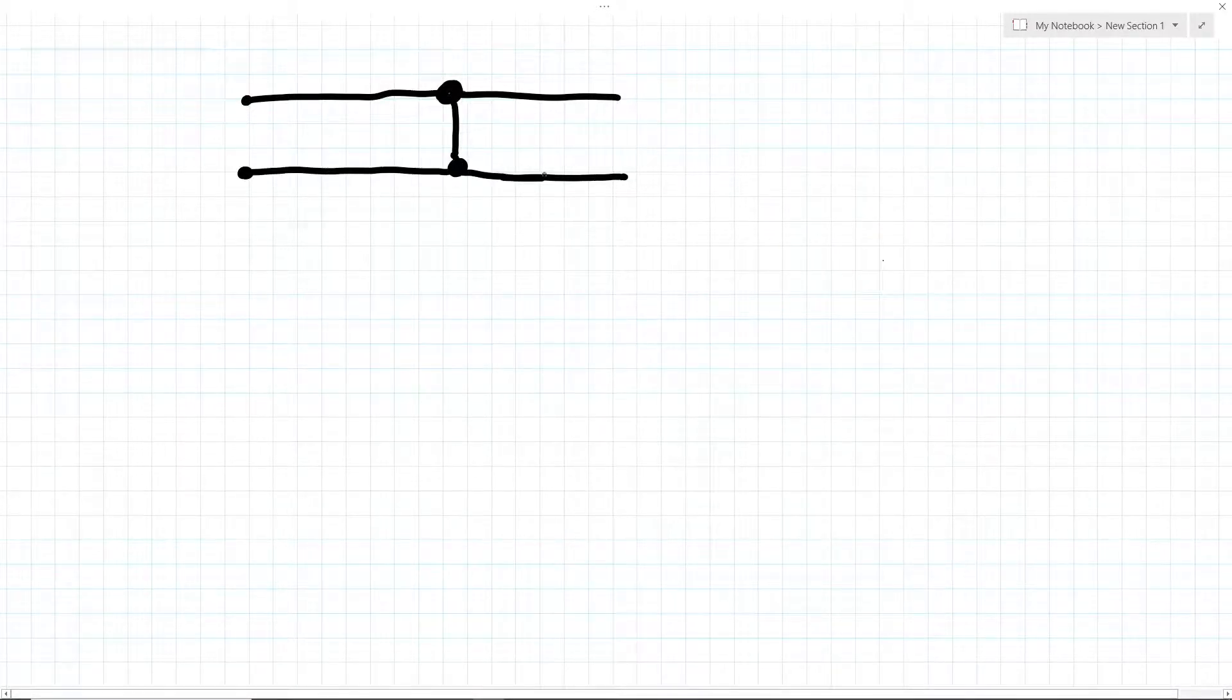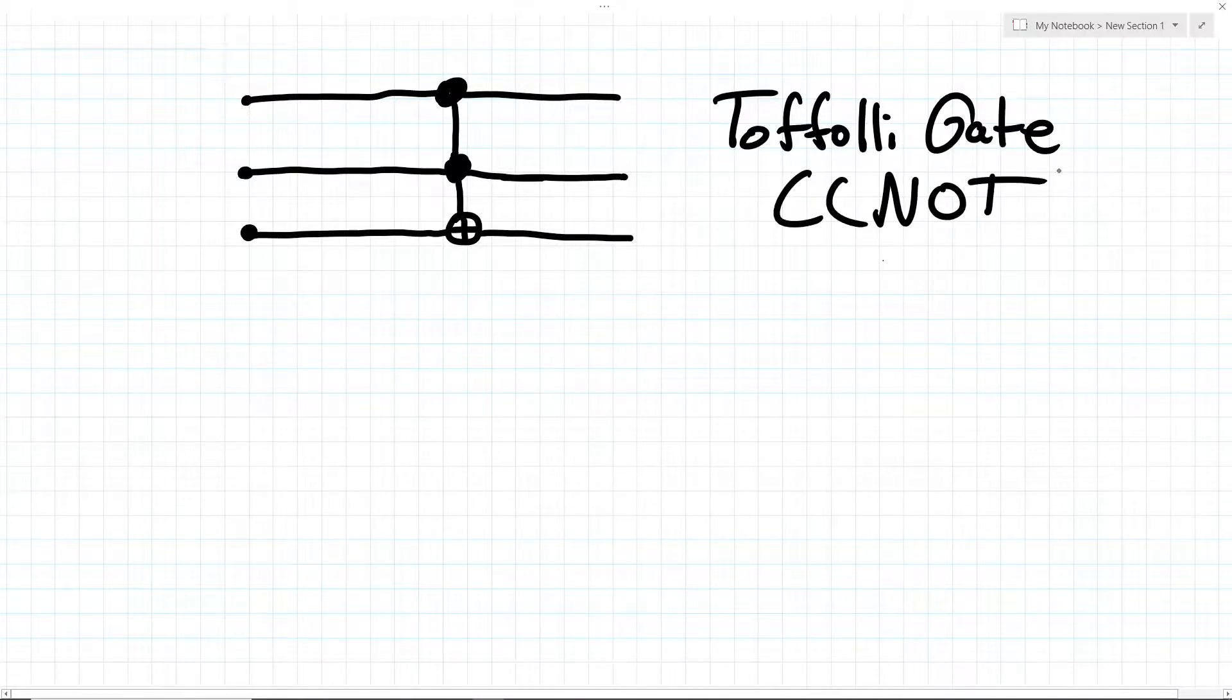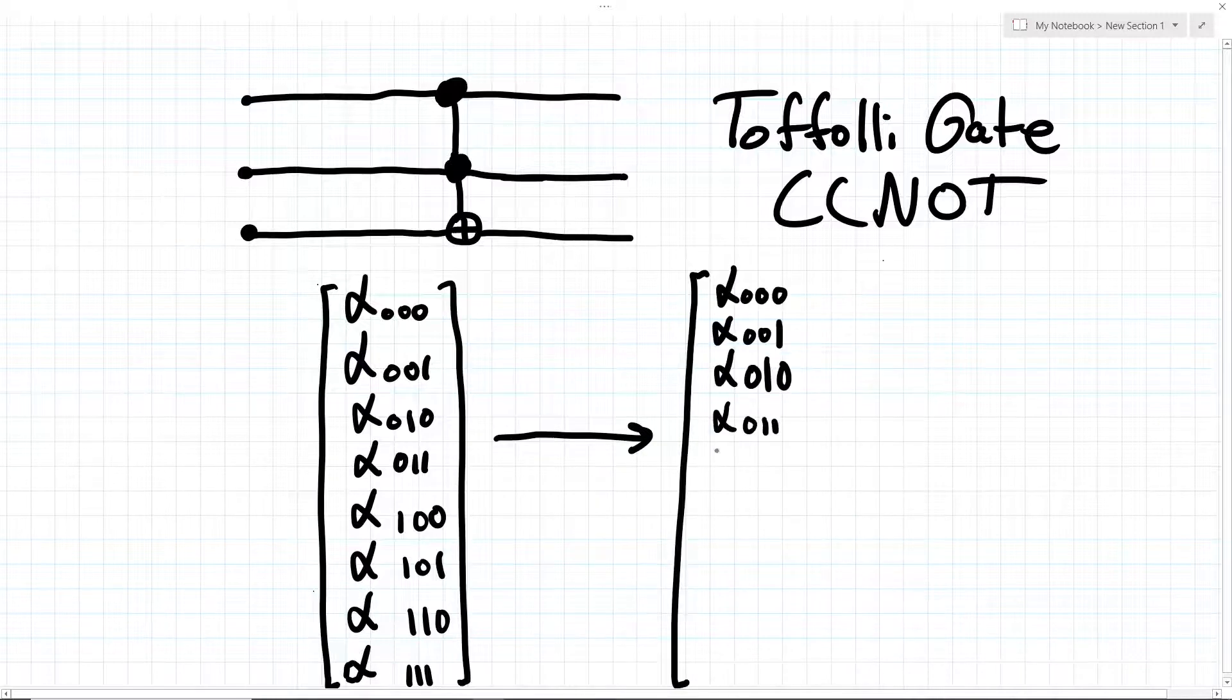What if we use more than one control? Well this allows us to create some really interesting gates. Like for example, the Toffoli gate, which is a double controlled NOT. It will swap the amplitude to the states 1, 1, 0, and 1, 1, 1, or the two states where the controls are 1 and the target is being swapped.